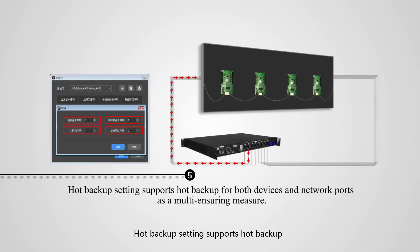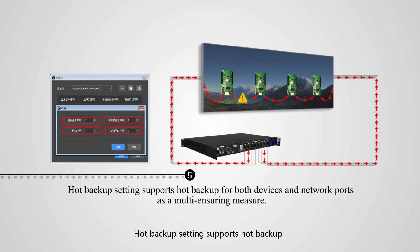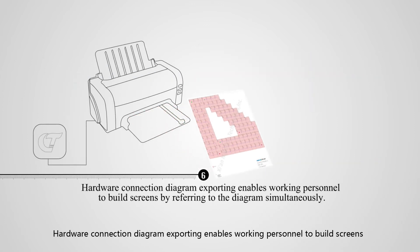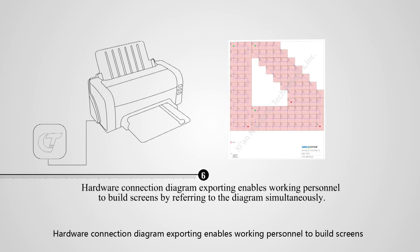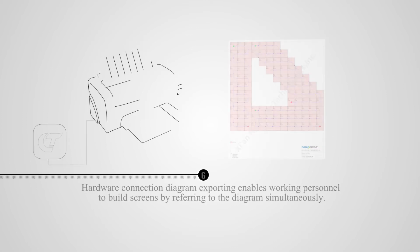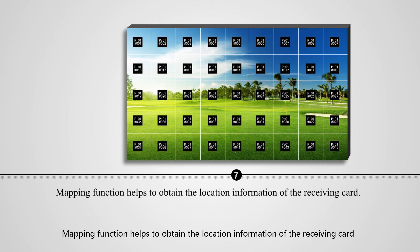Hot backup setting supports hot backup for both devices and network ports as a multi-insuring measure. Hardware connection diagram exporting enables working personnel to build screens by referring to the diagram simultaneously. Mapping function helps to obtain the location information of the receiving card.